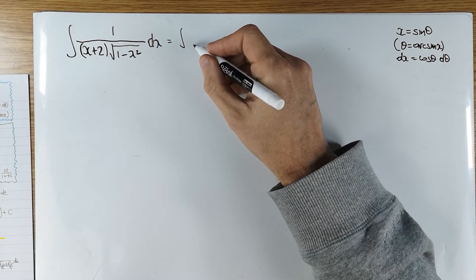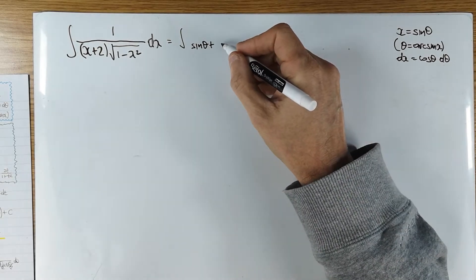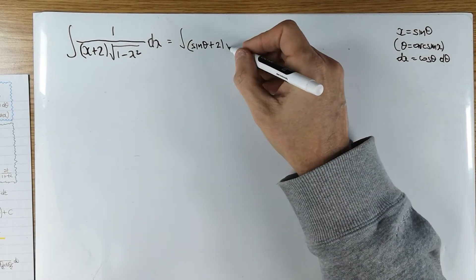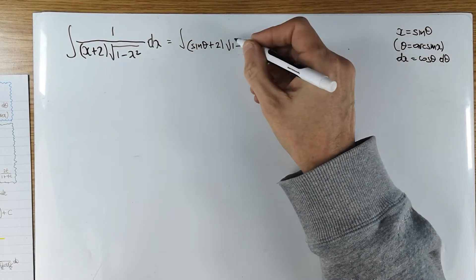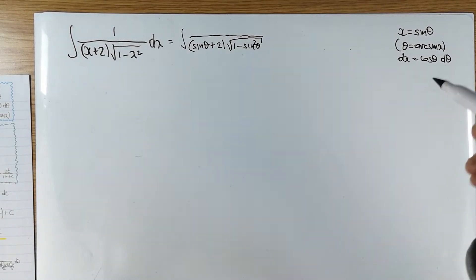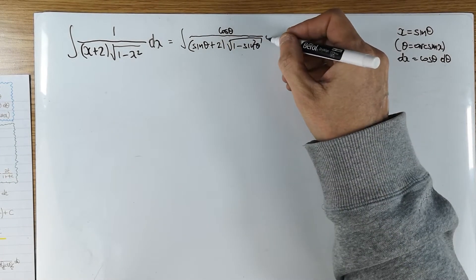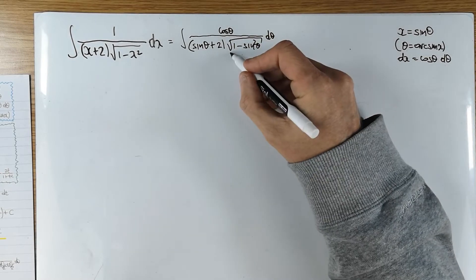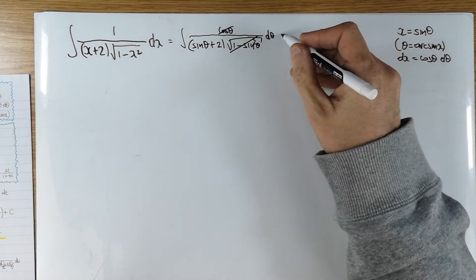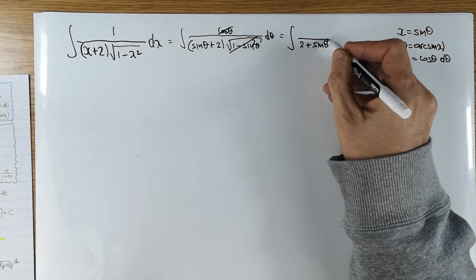This is going to become sin θ plus 2, and this quantity will be 1 minus sin²θ — that's the whole point of the substitution. The numerator is 1, and the dx is cos θ dθ. Putting cos θ on top of the fraction, the √(1 − sin²θ) in the square root will cancel the cos. So this now becomes the integral of (2 + sin θ) dθ.